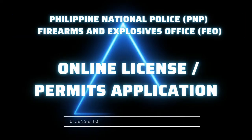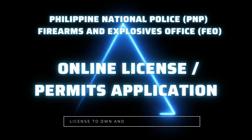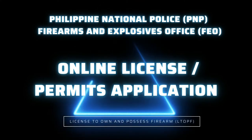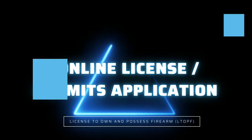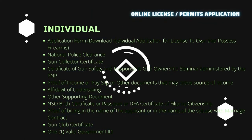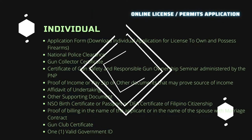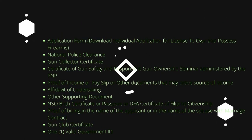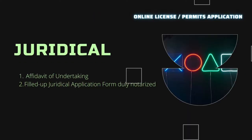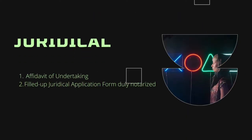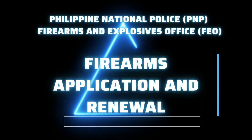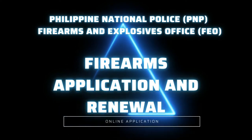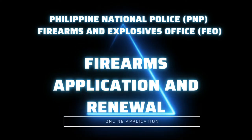You may also apply at the Online License or Permits Application at the NFAO website at www.feo-system.com. Options include Online License or Permits Application for Individual, Online License or Permits Application for Juridical, and Online Firearms Application and Renewal.